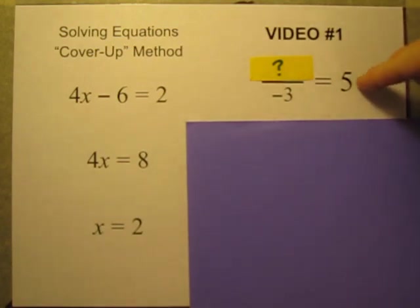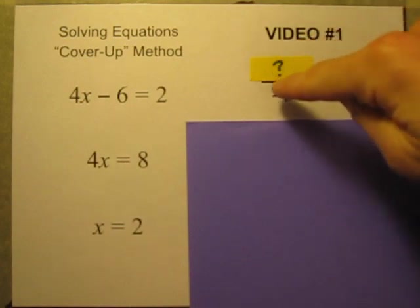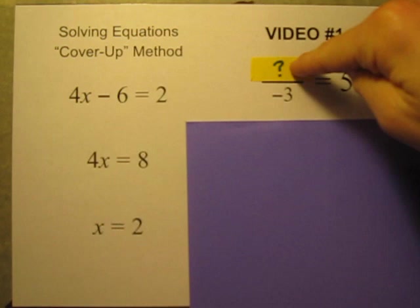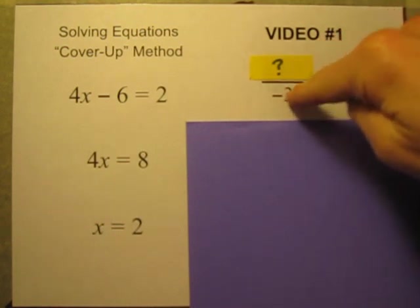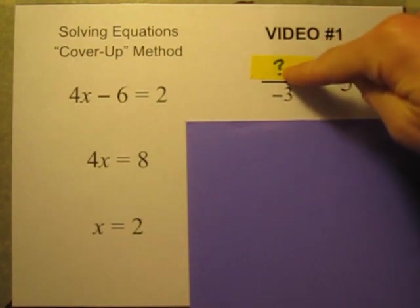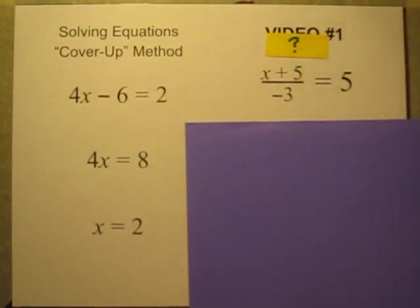What divided by negative 3 is equal to 5. And I know the answer is positive. So a negative divided by a negative makes a positive. So this must be a negative up here. And I know negative 15 divided by negative 3 is equal to positive 5. So this chunk that I'm covering up here must be equal to negative 15. So x plus 5 equals negative 15.